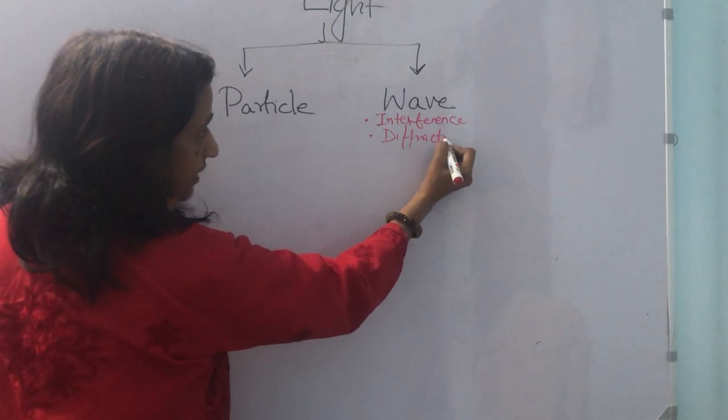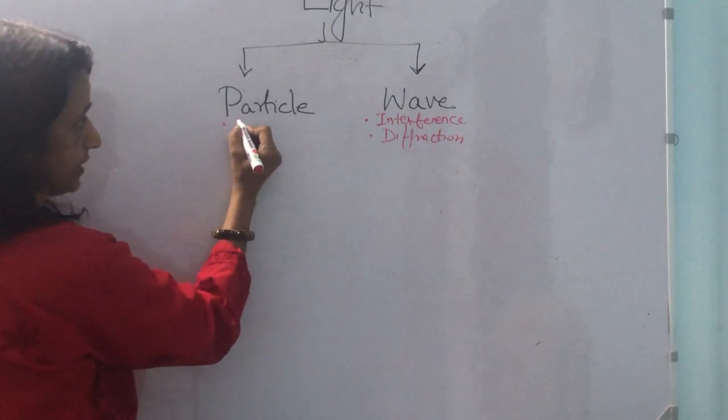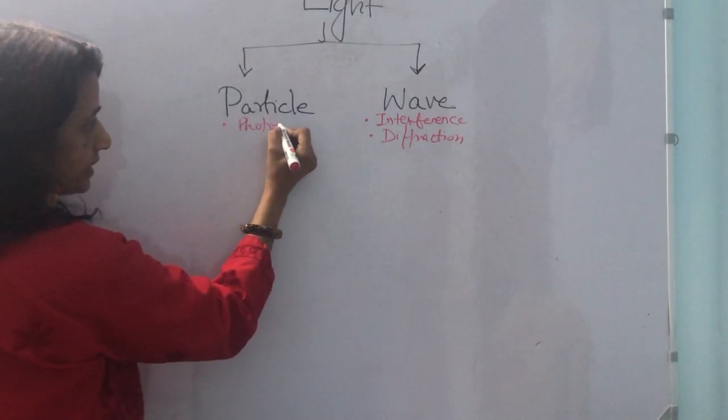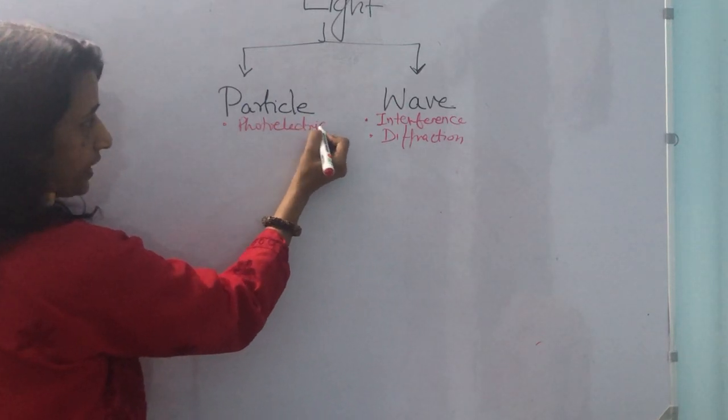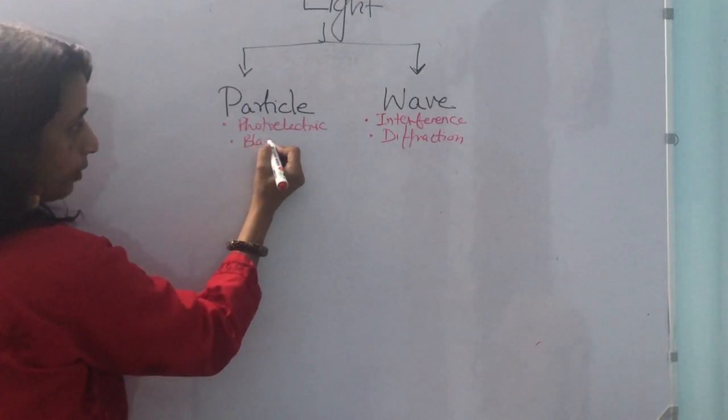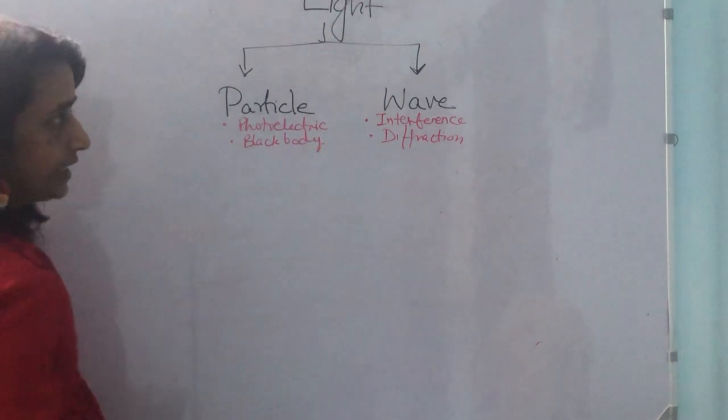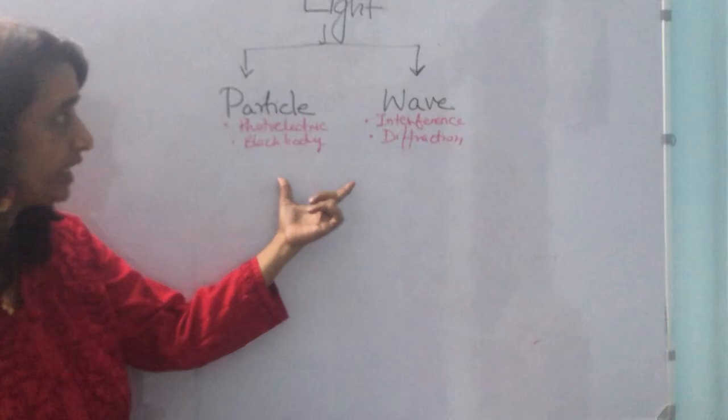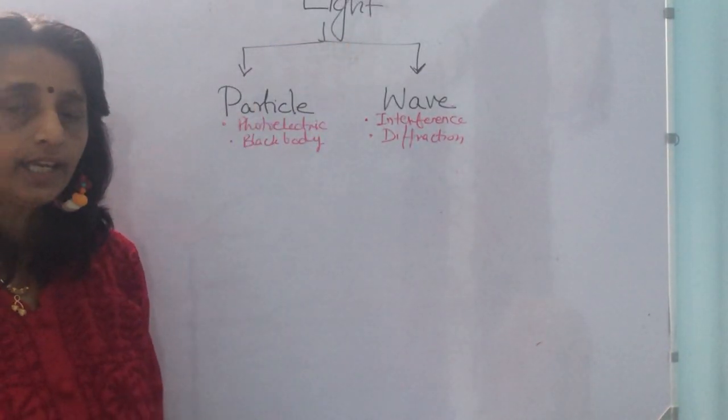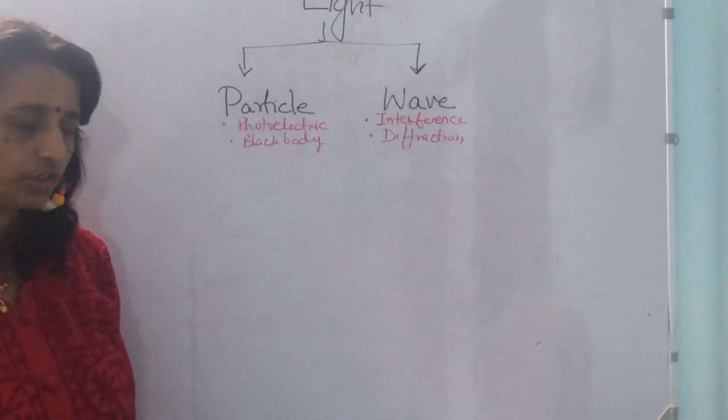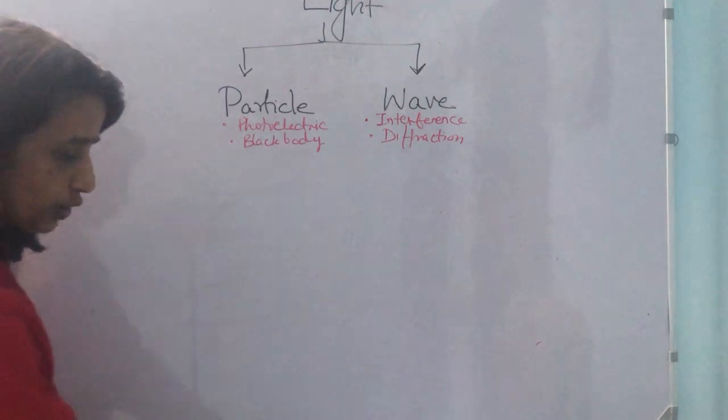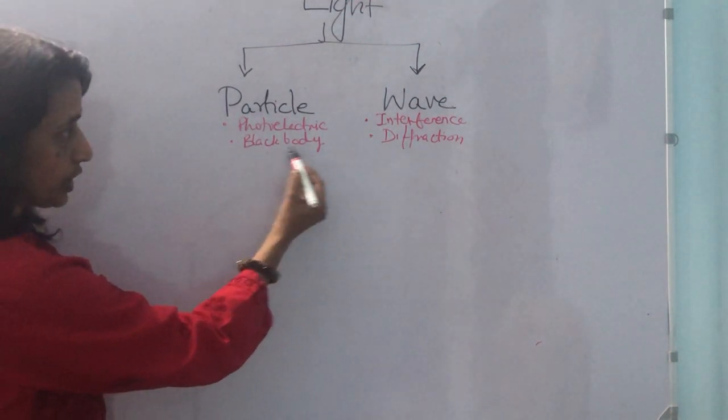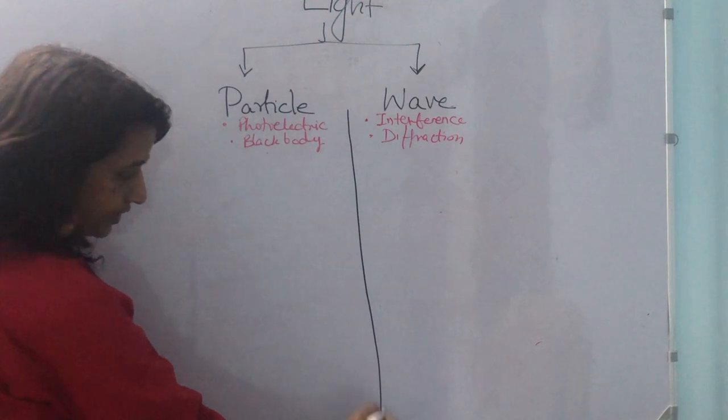As a particle, photoelectric effect, black body radiation. So here particle nature and wave nature. This is the dual nature which is shown by electromagnetic radiation or light. Let us have a closer look at this particle and wave nature.